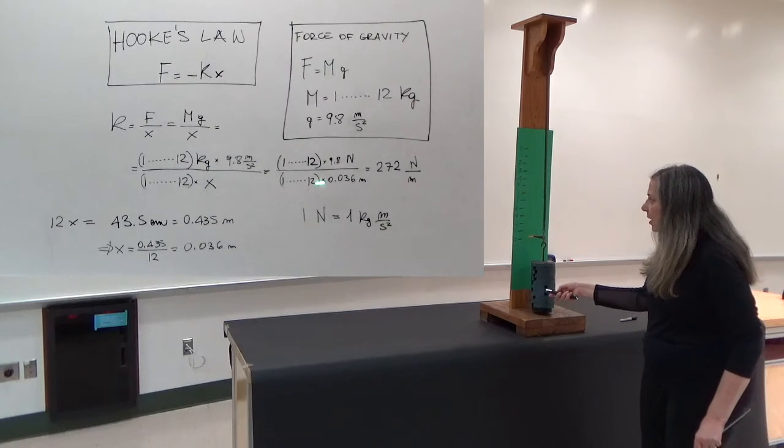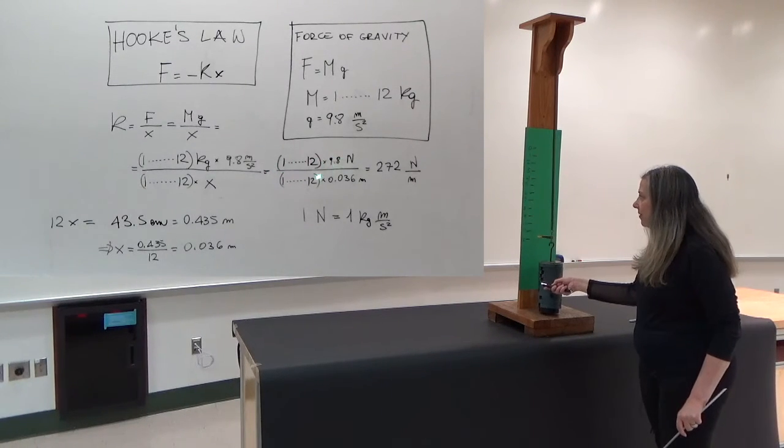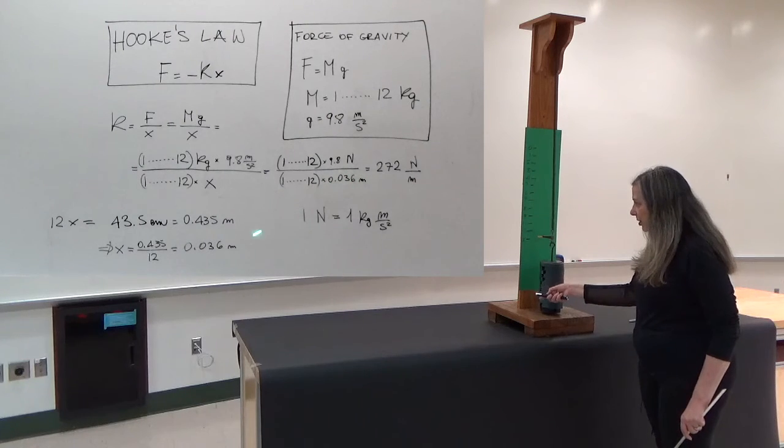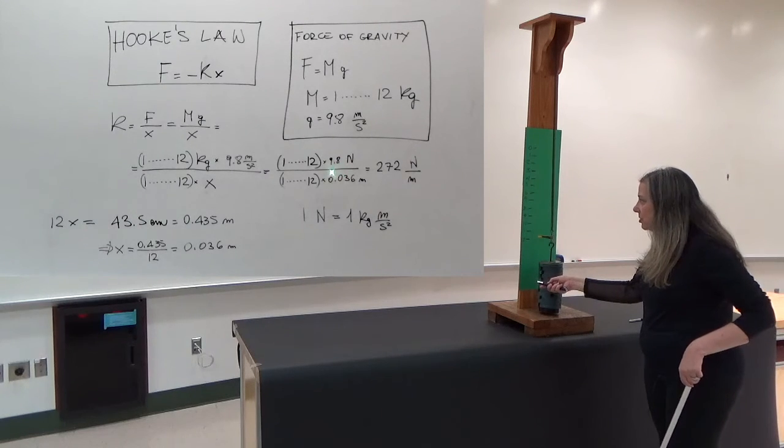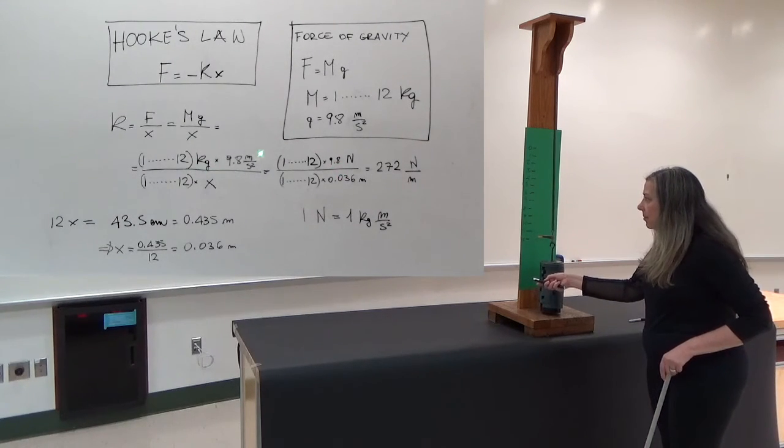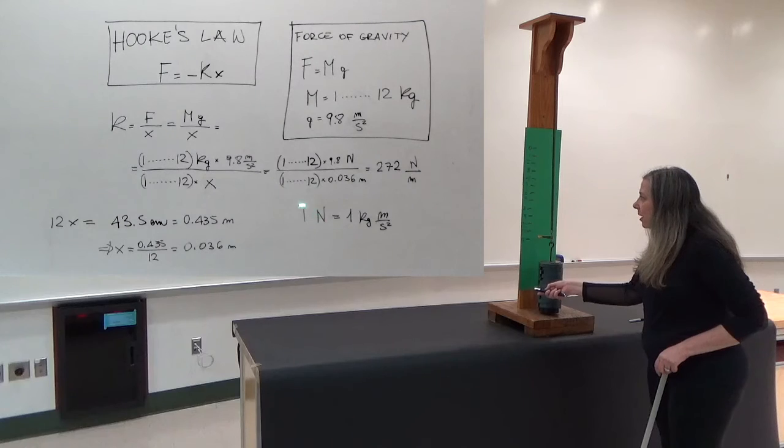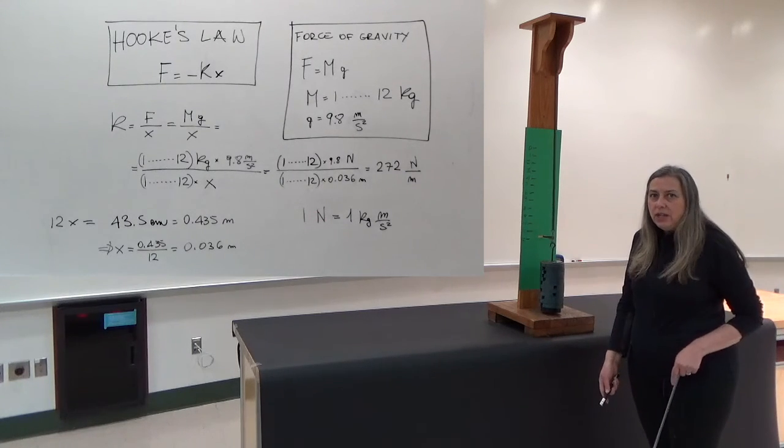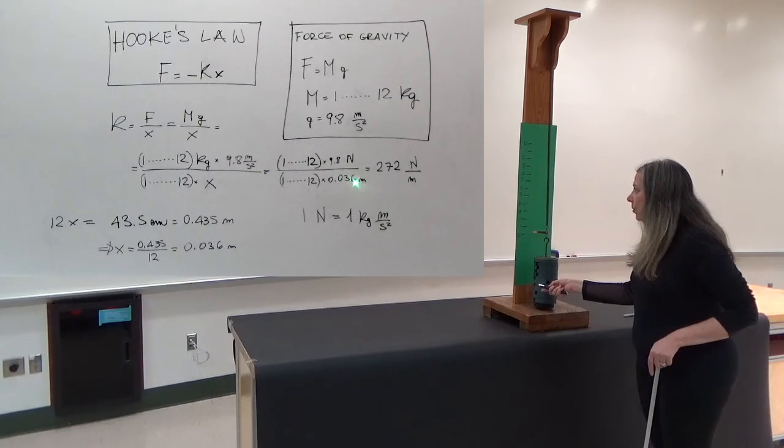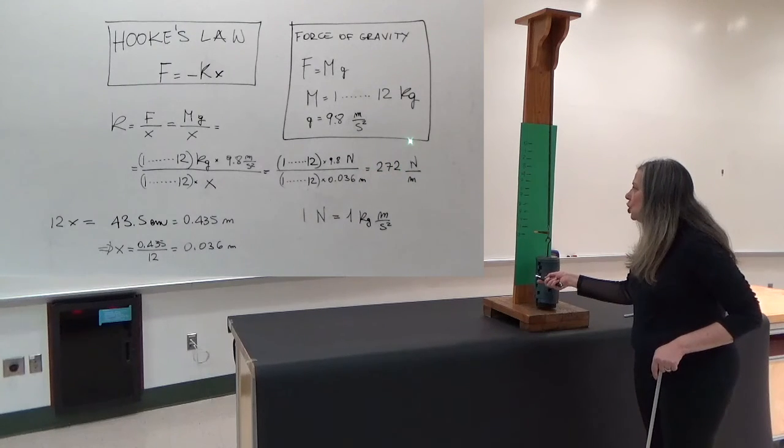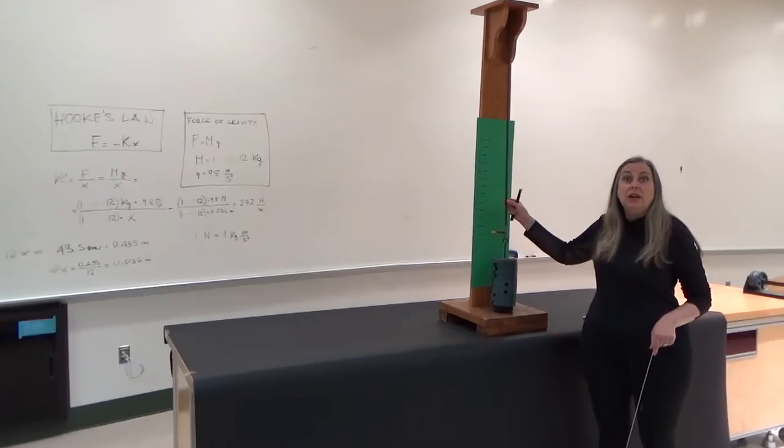I plug that number in here and what I get is 1 through 12 multiplied by the acceleration of gravity, 1 through 12 multiplied by x, which is this number I just calculated, and then there's another really useful simplification. You see that 1 kilogram by 1 meter divided by a square second is called 1 newton. That's the unit of force. So simply 9.8 divided by 0.036 gives 272 newtons per meter. This is the value for the spring constant for this particular spring.